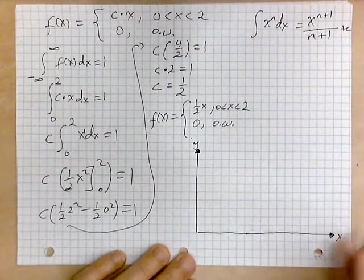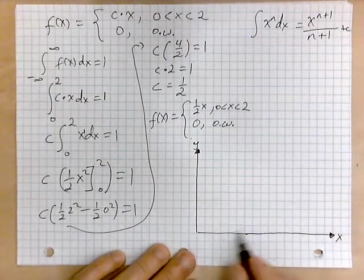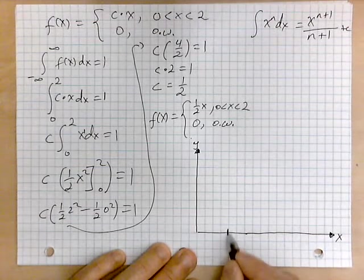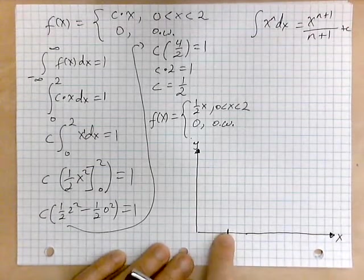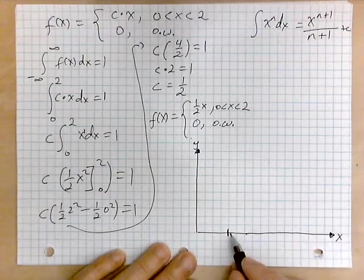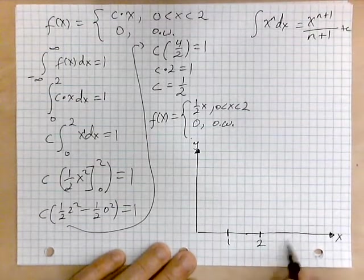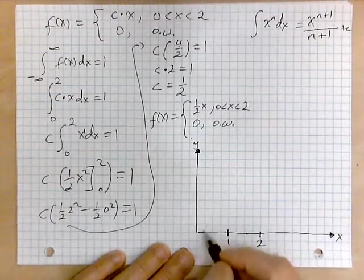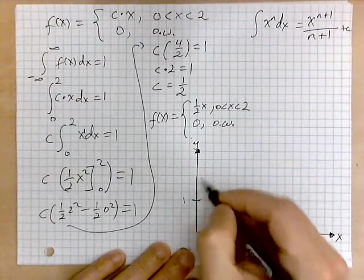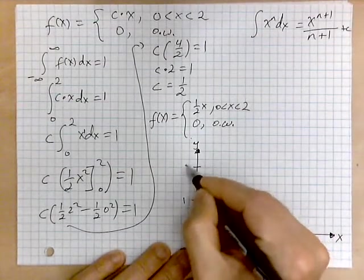Let's draw a picture representation of this function. So here to make things more convenient we will scale in terms of every 4 boxes will be a 1. So that's 1. In another 4 boxes, 1, 2, 3, 4 will be our 2. So this is 1 and this is 2. Likewise on the vertical axis. This is 1 and this is 2.